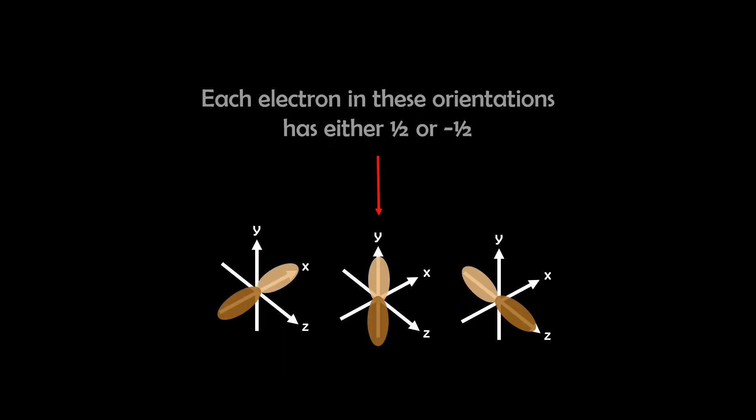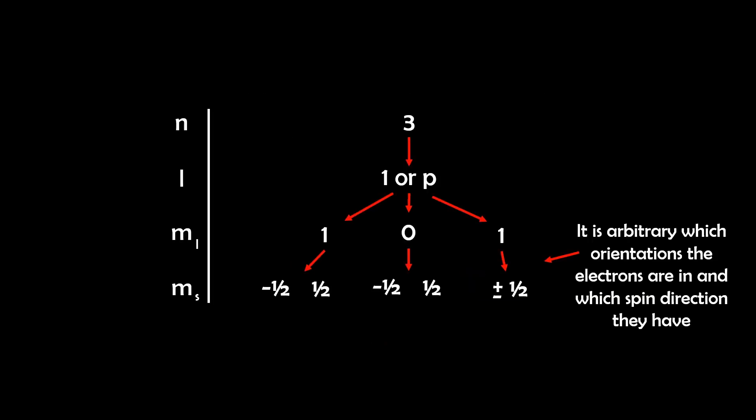And lastly, each electron in these orientations has a spin quantum number of either positive 1 half or negative 1 half. And this gives the possible quantum numbers for 3p5 as follows.